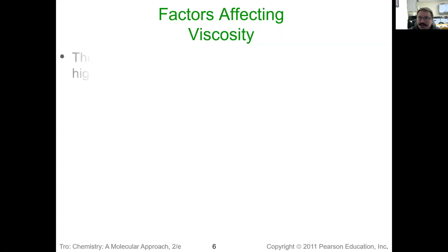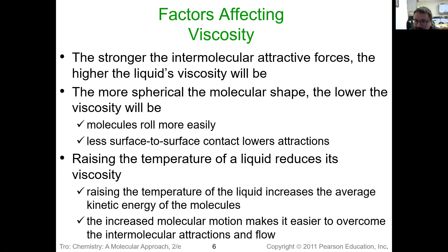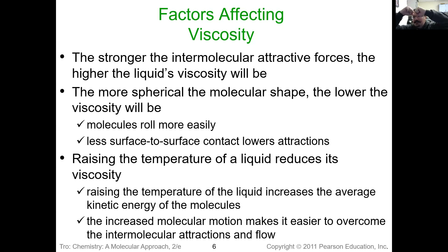What affects viscosity? The intermolecular attractive forces and the temperature — same as surface tension. Increase the temperature, give it more kinetic energy, more molecular motion, and viscosity decreases — it becomes more liable to flow. The other factor is the shape of molecules. Long flat chains have a lot of surface area for intermolecular interactions, whereas spheres only contact at one small point, giving much less surface-to-surface contact. So long flat chains are much more viscous than spherical molecules, which can move and flow around each other much more easily.